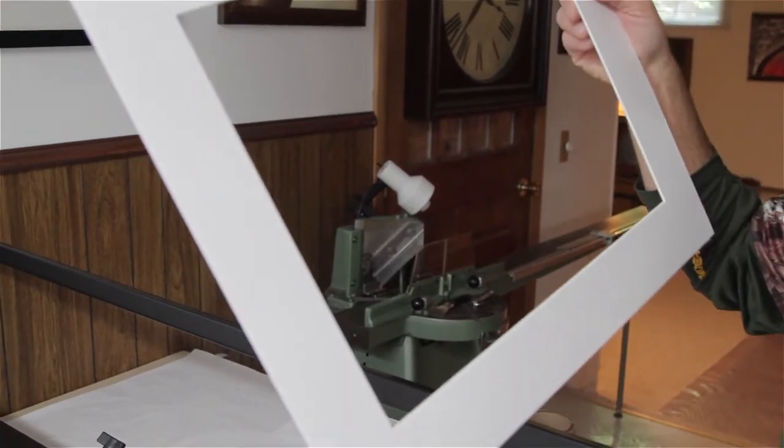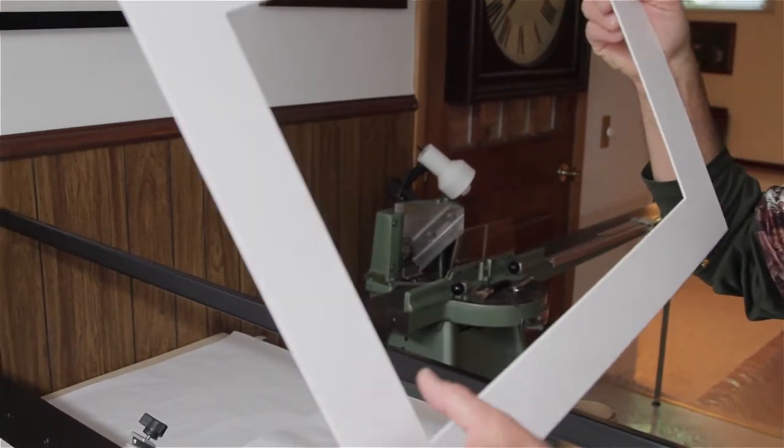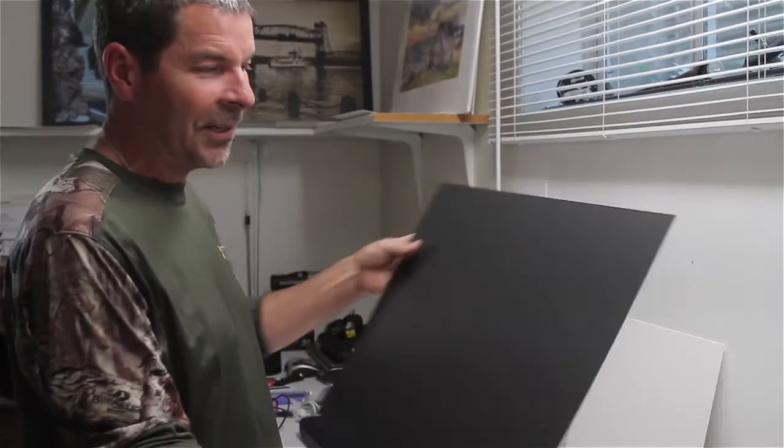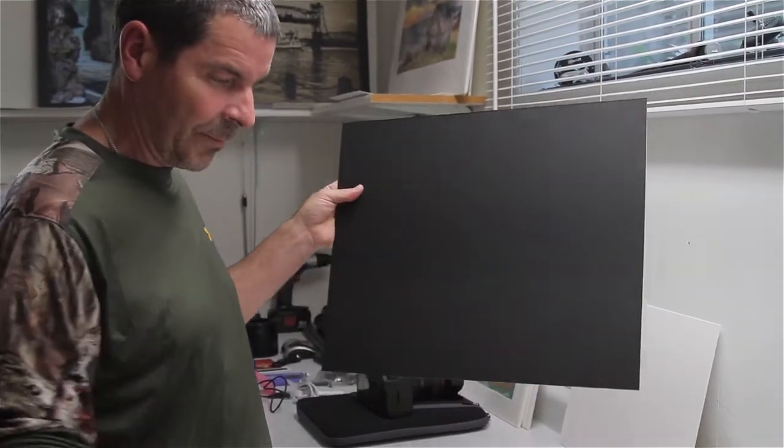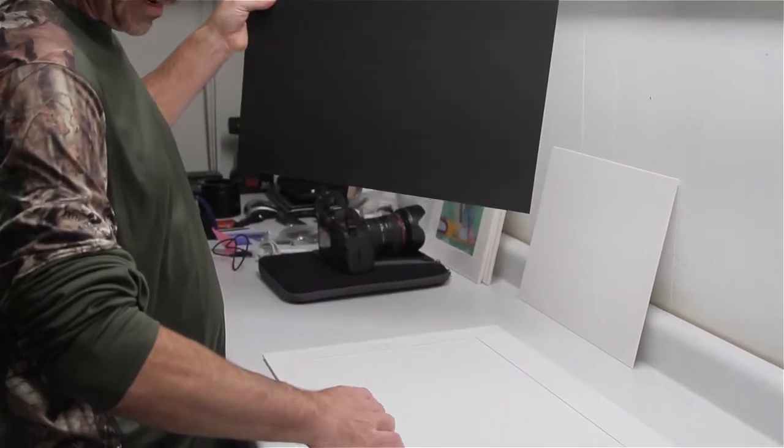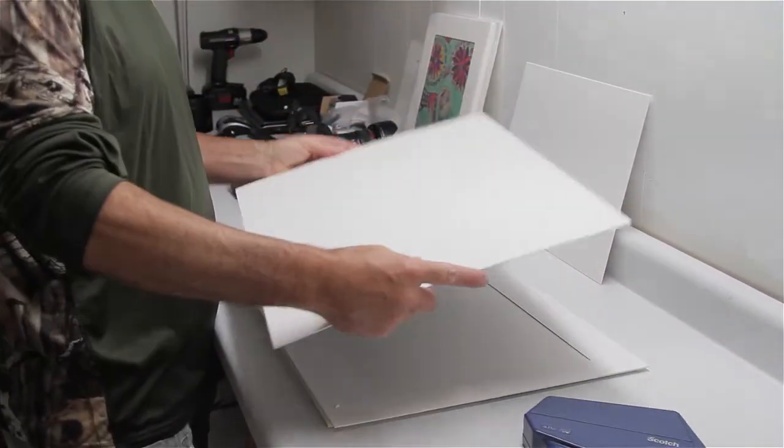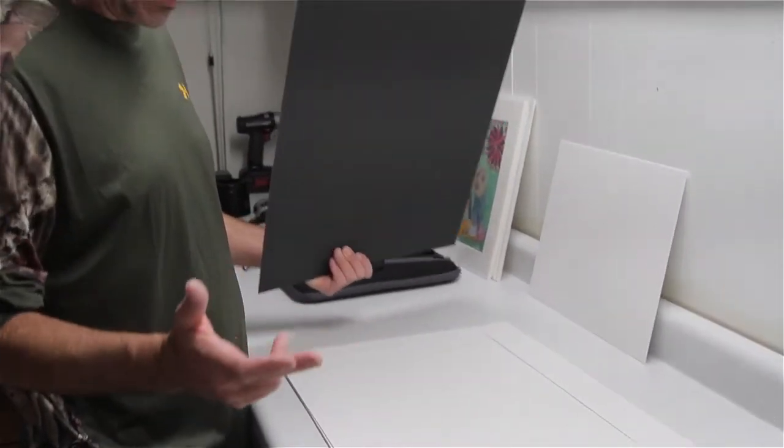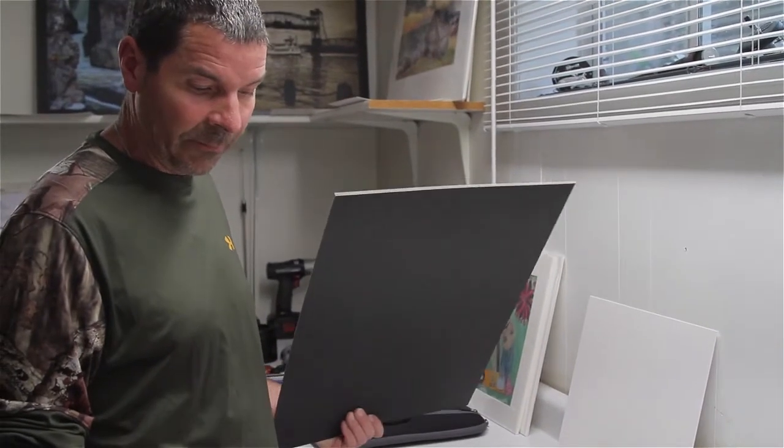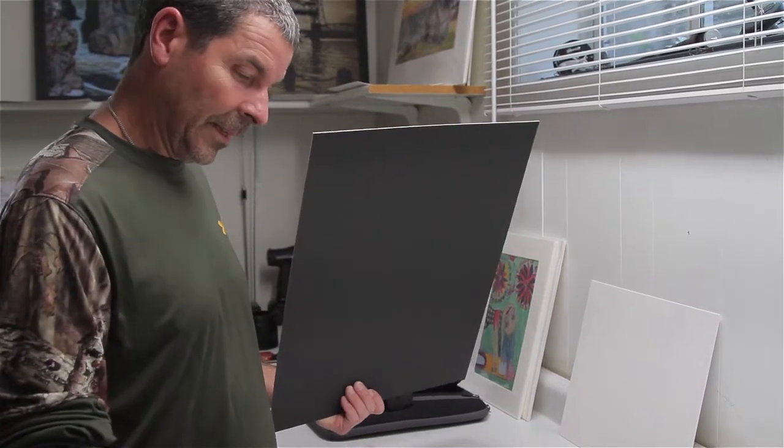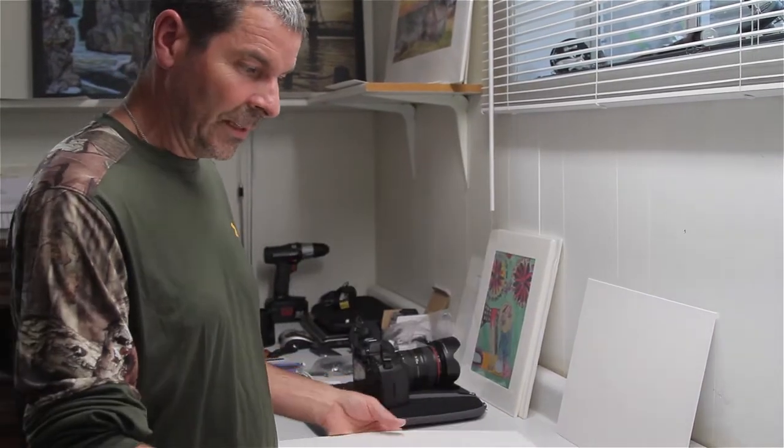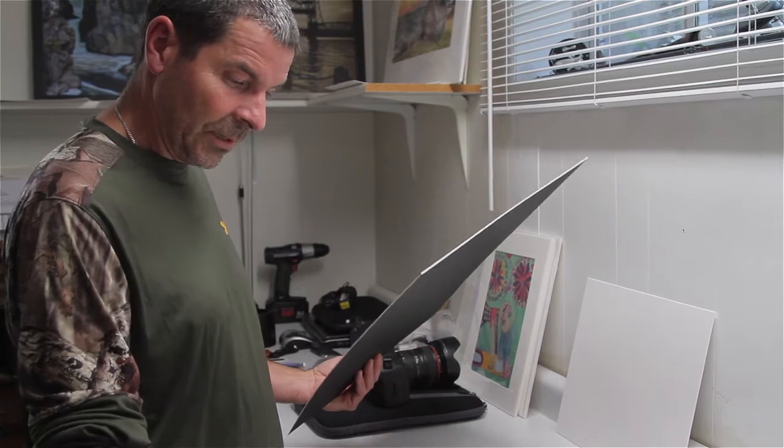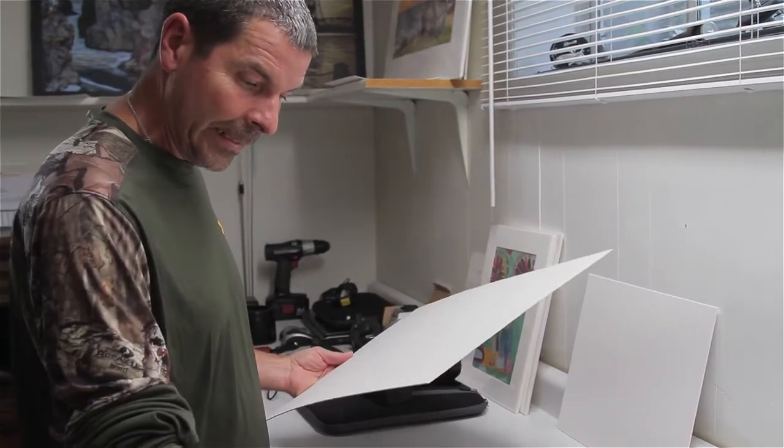Now we're going to adhere our black mat to the white mat. We've got the white one face down. The black mat is slightly smaller overall on the dimensions, like an eighth of an inch length and width, so that when we put this back in to do our inner cut, it's guiding off the outer mat.